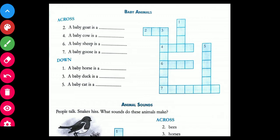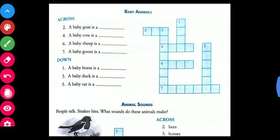A baby goat is a kid. Fourth, a baby cow is calf. Six, a baby sheep is lamb. And baby goose is gosling, G-O-S-L-I-N-G.